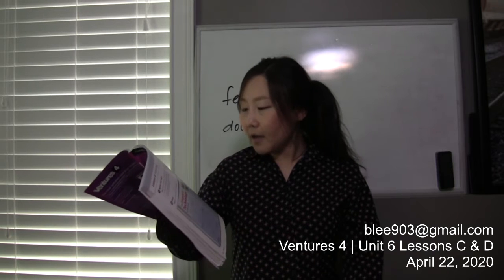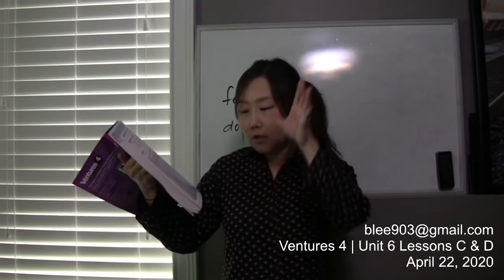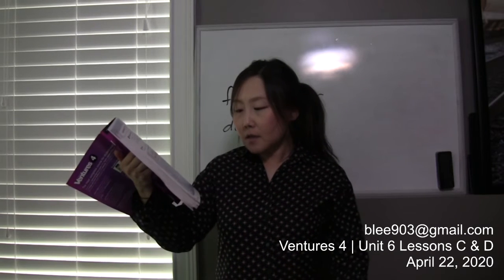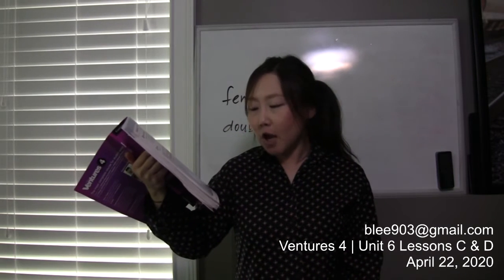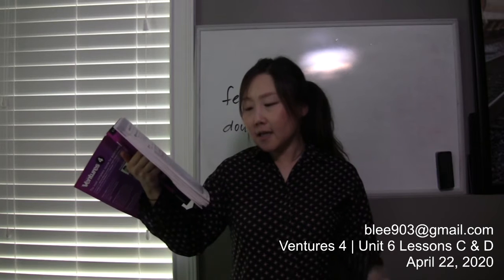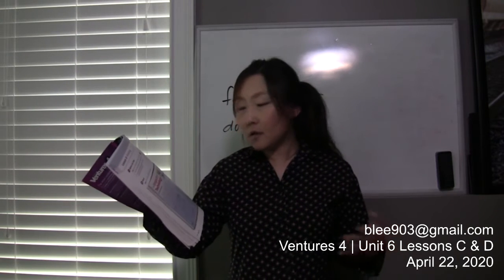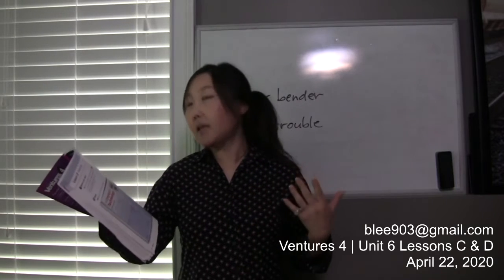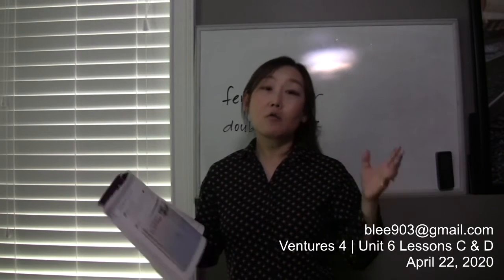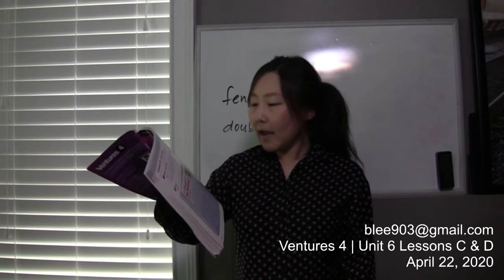Number five: 'classified.' You can find that at the bottom of the first column. It says, 'People used to look for job openings in the classified ads of a newspaper.' In this case, 'classified' is an adjective, and it means categorized or arranged in a certain way.